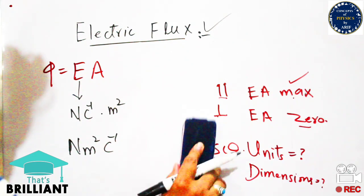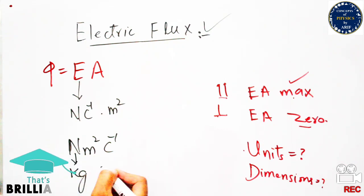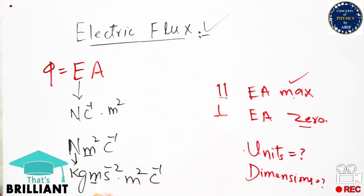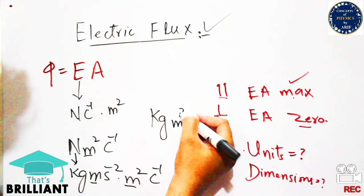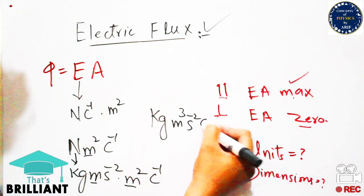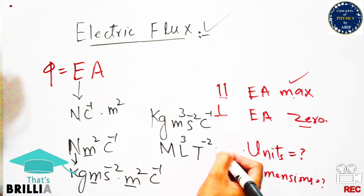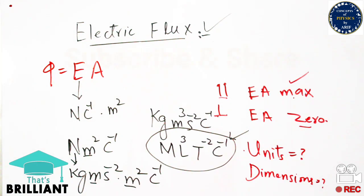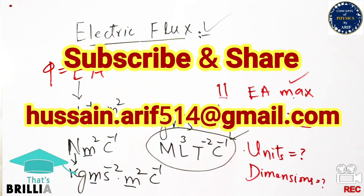Expanding into SI units: newton can be written as kilogram meter per second squared, so the full unit becomes kilogram times meter cubed per second squared per coulomb. This is the final unit of electric flux. In terms of dimensions: kilogram comes from mass M, meter comes from length L, second comes from time T, and coulomb remains as the charge dimension.